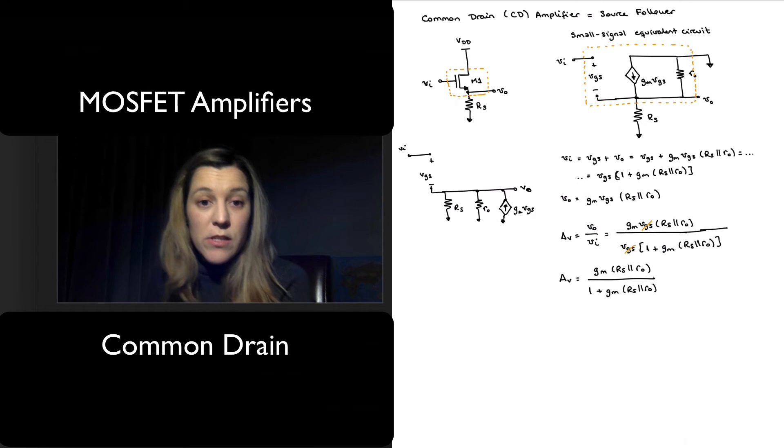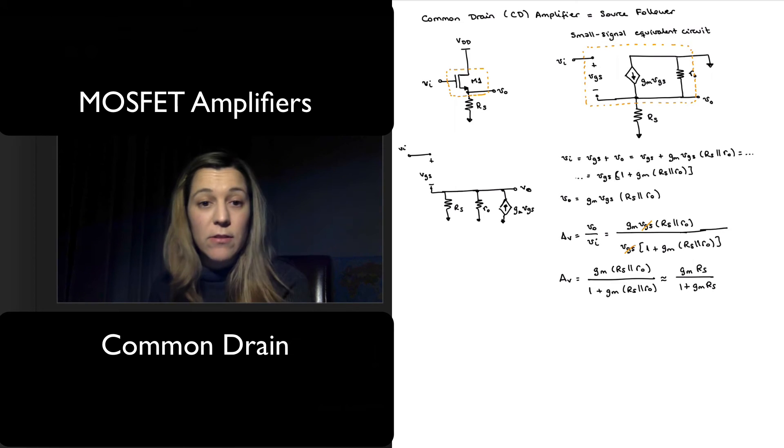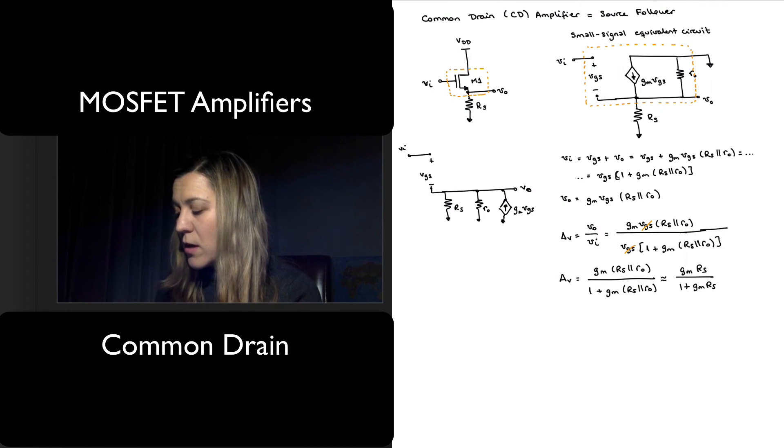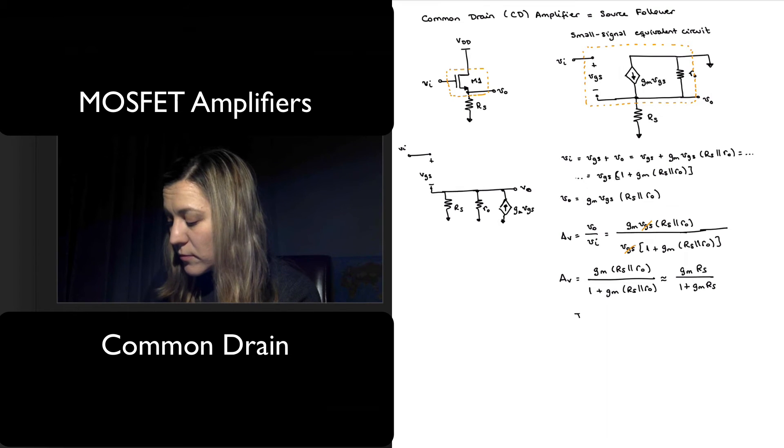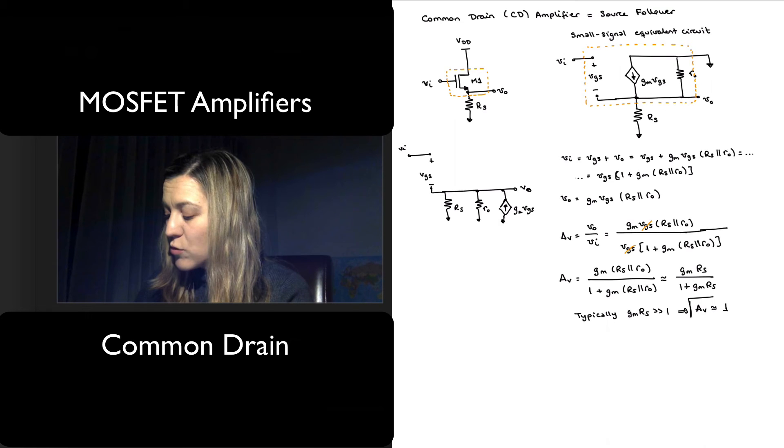In some cases, we may neglect the effect of r_out and just approximate this as g_m R_S over (1 plus g_m R_S). It depends on the fact that typically r_out is very much larger than R_S, and therefore R_S is going to dominate that parallel combination. In any case, typically we will have that g_m R_S is much greater than 1, and therefore the voltage gain of the source follower can be approximated as 1, and that's the name source follower.